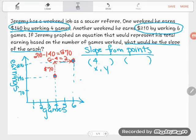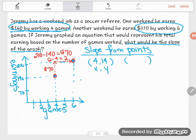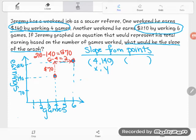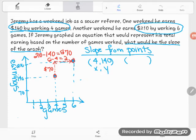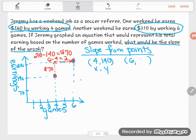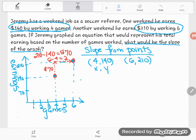So he works 4 games and then he makes $140. The 140 depends on the number of games he works. He works 6 games and he makes $210.